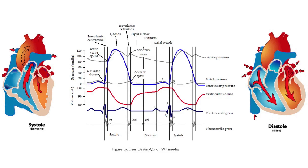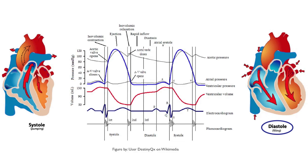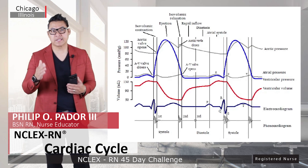Here we are looking at the entire cardiac cycle. We have this graph that shows a number of details. We're going to take everything and break it down into one section at a time. We're talking about one complete heartbeat — the contraction and the relaxation of the atria, and the contraction and the relaxation of the ventricles. Anytime I say contraction, I'm referring to systole, and when I say relaxation, I'm referring to diastole.